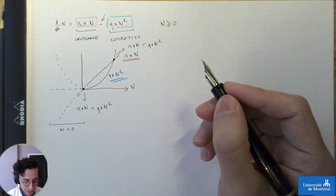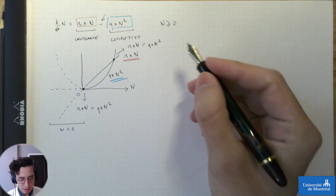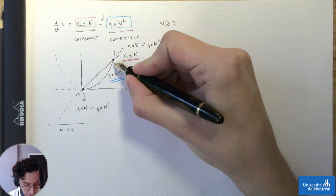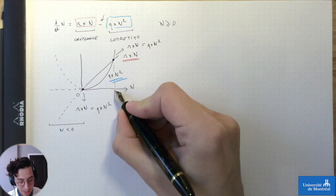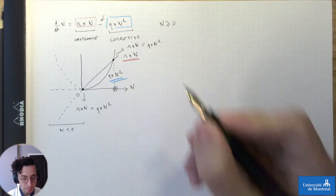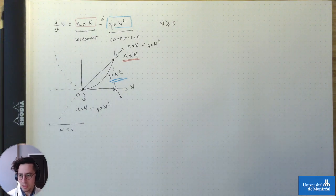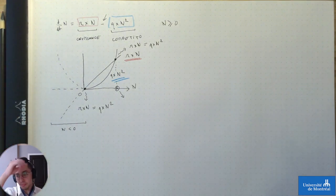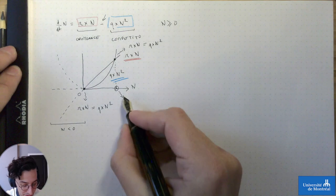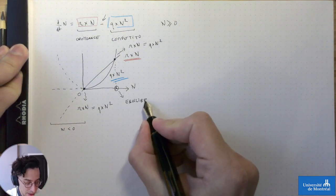Qu'est-ce qu'on peut apprendre d'autre de cette visualisation ? On devrait être capable de projeter ce point ici sur l'axe de n, et il devrait y avoir une certaine valeur de n pour laquelle notre système va atteindre son état d'équilibre. On va la calculer un peu plus tard. Mais là, il y a une valeur assez intéressante qui va être une valeur d'équilibre.